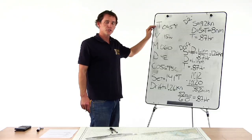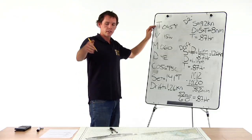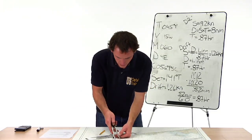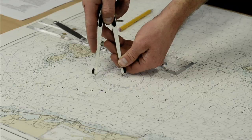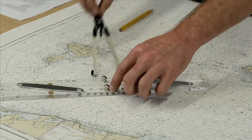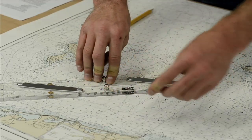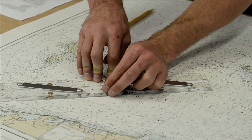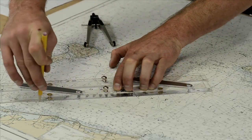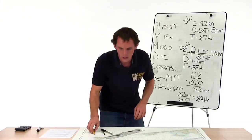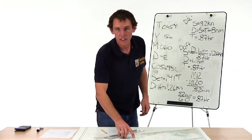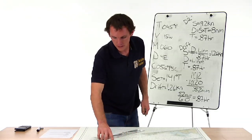Now we plot 45 degrees true from our starting point toward 45. We get our dividers, go from the center, put it right on 45, and bump our parallel rules on it. Now we have 45 on our parallel rules. We walk it to the starting point and strike a line — a nice long one. This is the course we should have followed; this is our dead reckoning course.